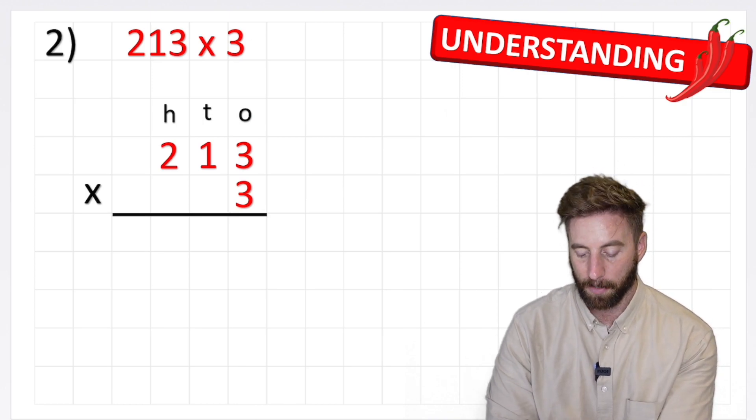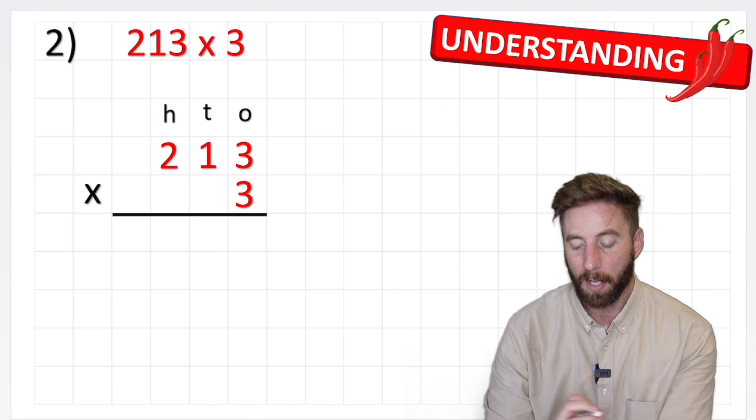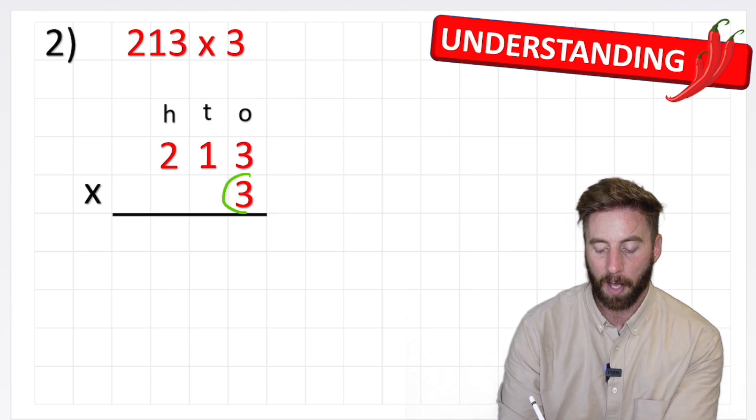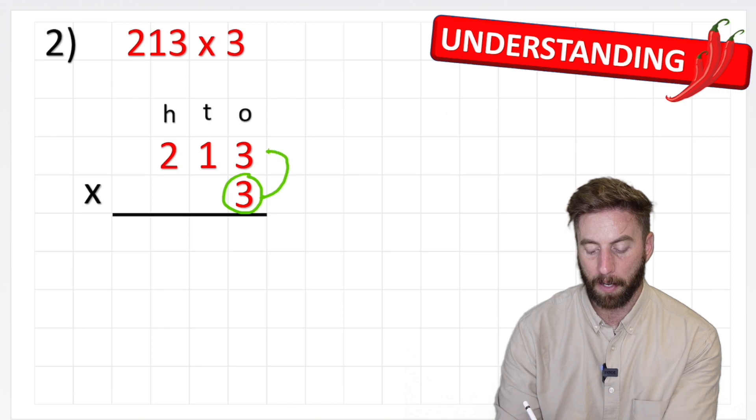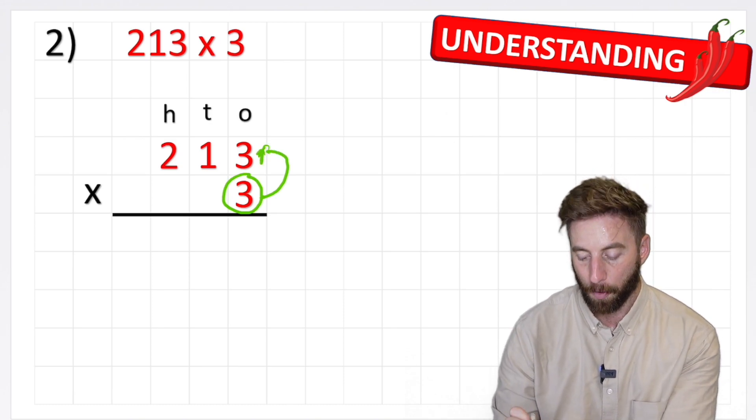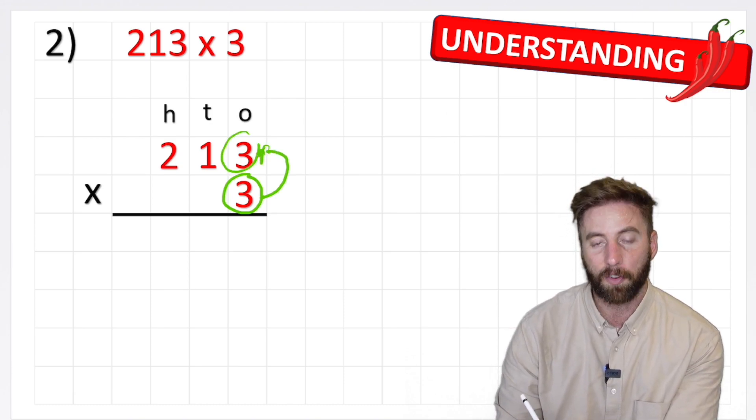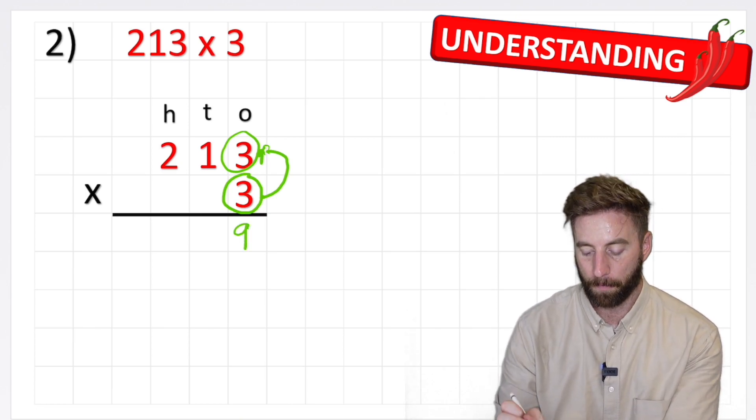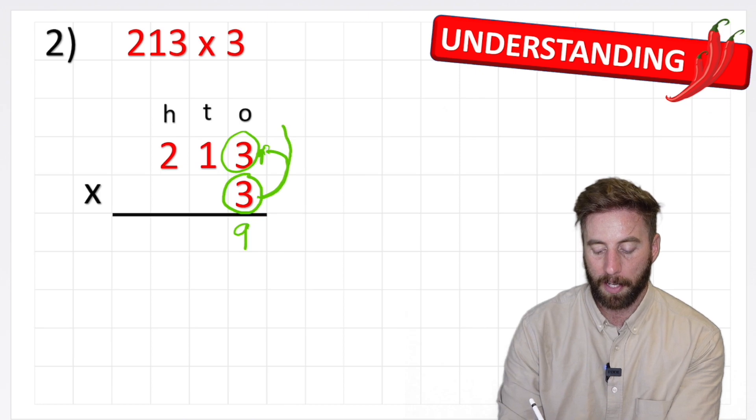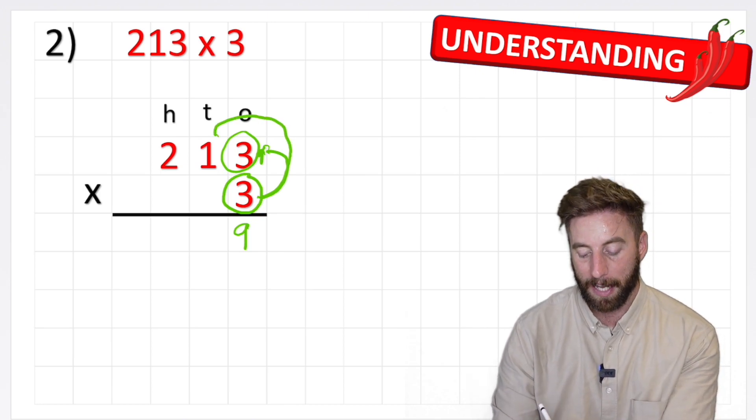And I'm ready to start. Where do I start? I start with my smallest value and I'm going to use the bottom line. So 3 multiplied by the smallest value on the top row, which is this other 3. 3 times 3 is 9. Put that inside the ones column.